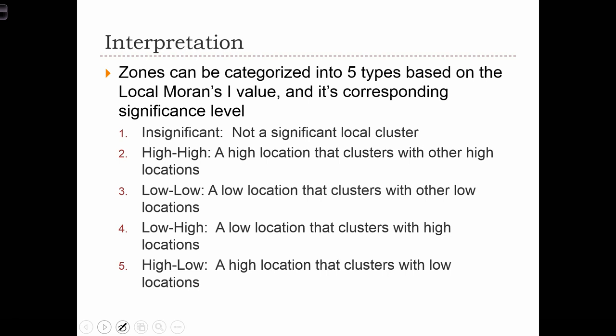In a typical implementation of local Moran's I, say using Esri ArcMap, zones can be categorized into five types based on the local Moran's output. First, a zone might be insignificant, in which case we can conclude that that location is not part of a significant local cluster or any negative spatial autocorrelation pattern.